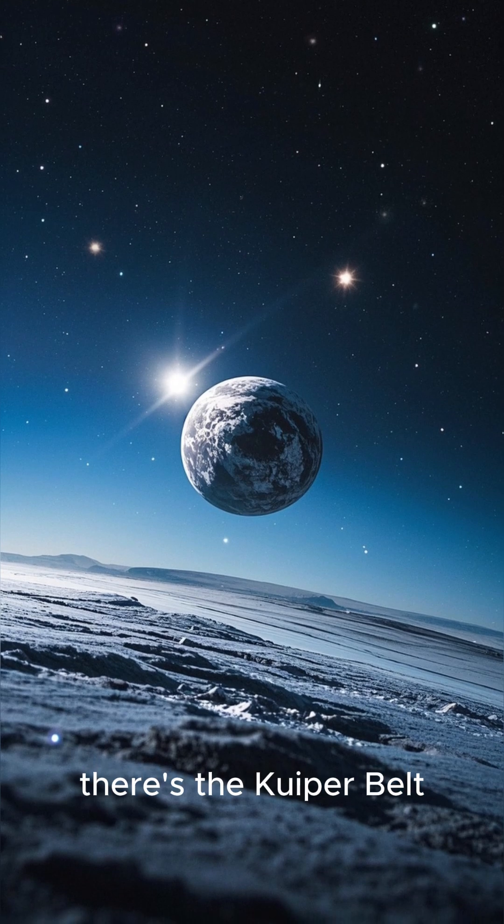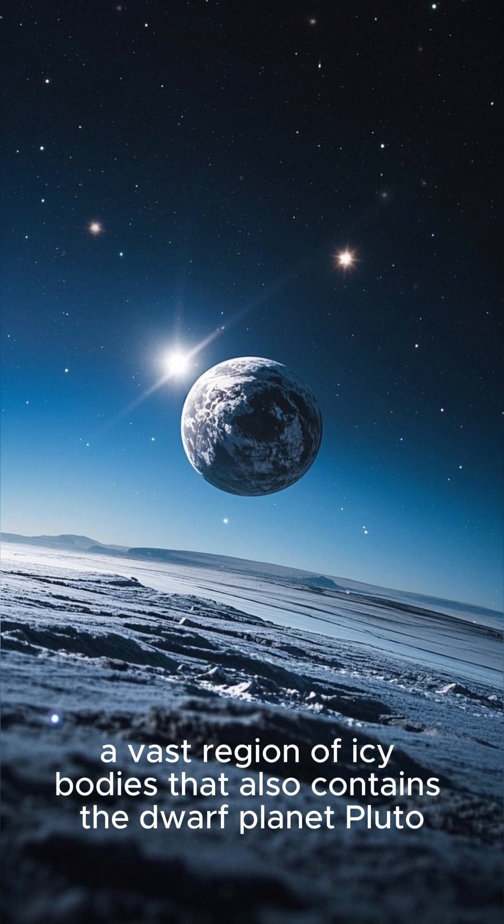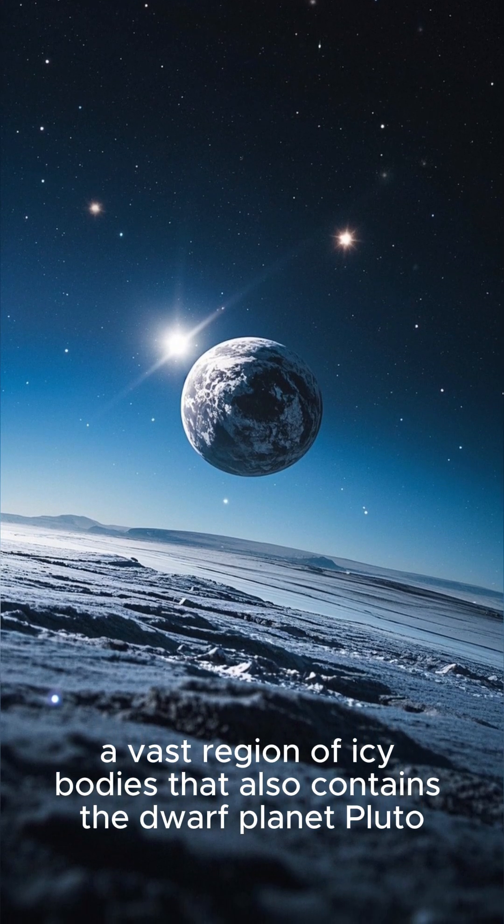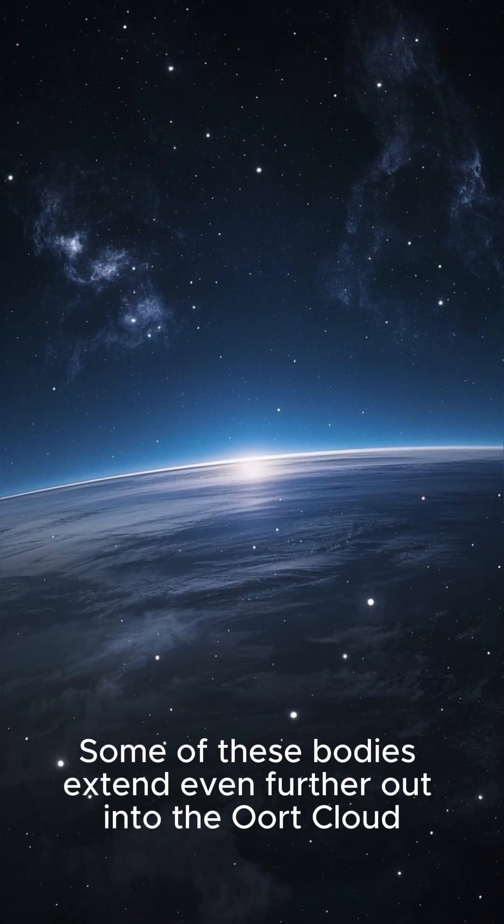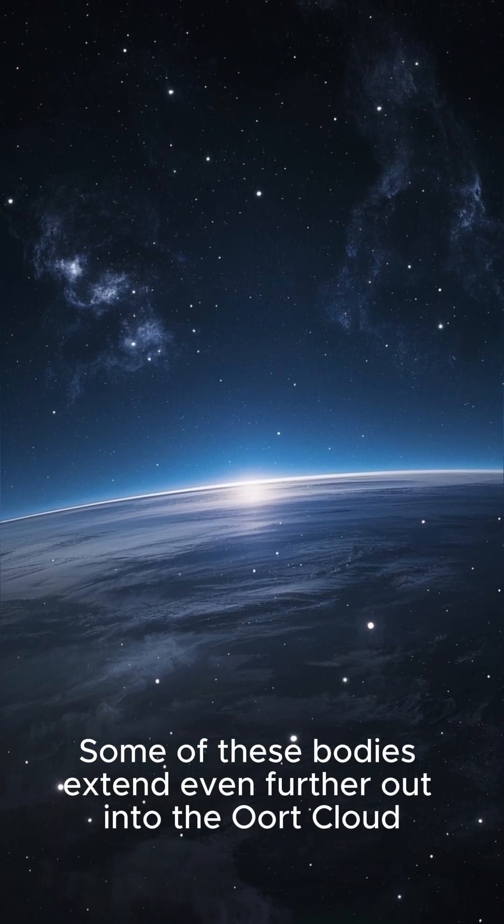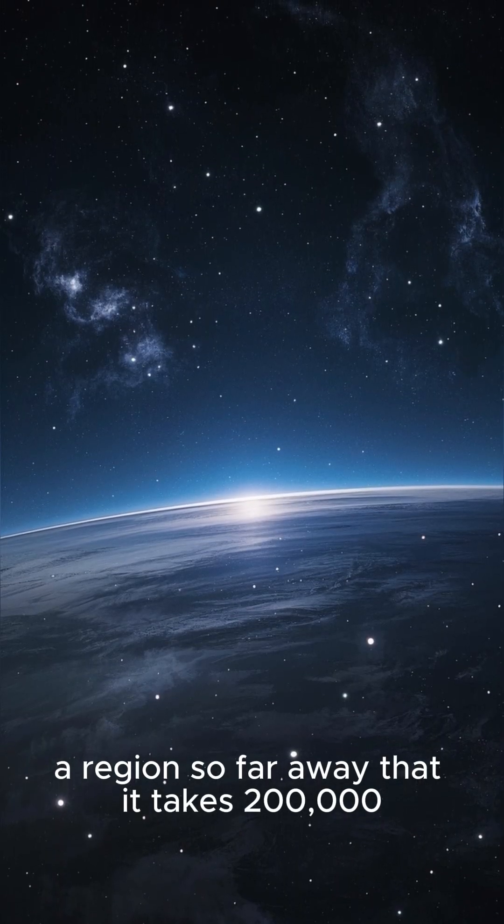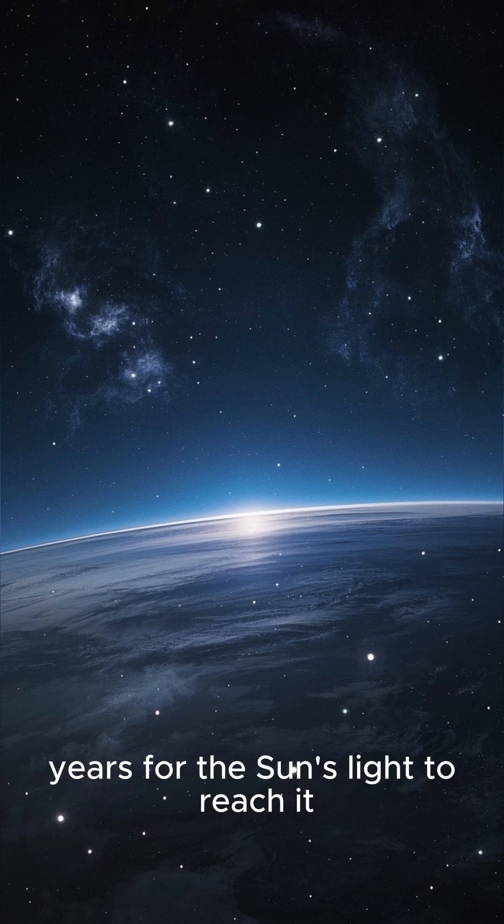And beyond Neptune, there's the Kuiper belt, a vast region of icy bodies that also contains the dwarf planet Pluto. Some of these bodies extend even further out into the Oort cloud, a region so far away that it takes 200,000 years for the Sun's light to reach it.